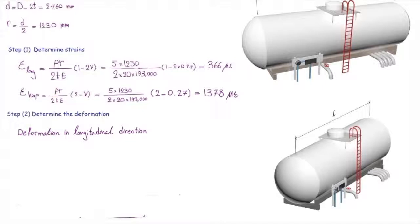I can determine the deformation by multiplying strain by length: 366 times 6,000 millimeters. Make sure to convert the strain using 10 to the minus 6. That equals 2.2 millimeters. In other words, the vessel length increases by 2.2 millimeters.